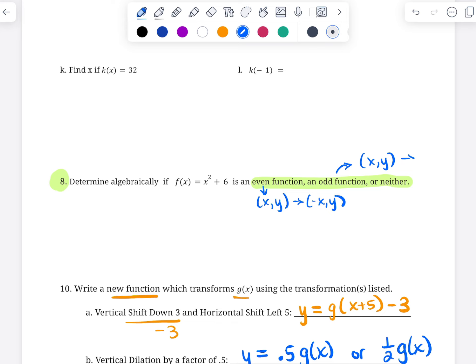And odd functions mean that if you have a point (x, y), then there's a corresponding point at (-x, -y). So whenever you want to determine algebraically, if you have some type of symmetry, the symmetry test is to take f(x) and change it to f(-x). So f(-x) in this particular example would be (-x)² + 6.